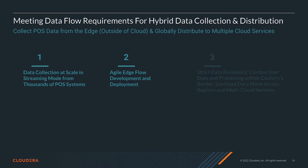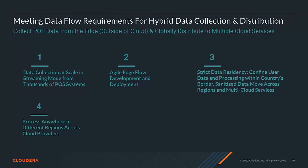Requirement number three: data residency requirements. The POS data and the processing of that data cannot occur outside the region of origination until that data has been redacted based on local geo rules. Requirement number four: these different geo rules require the use of different cloud providers and the need to process data in different regions.